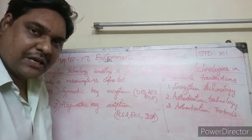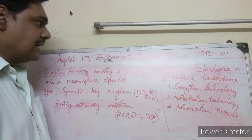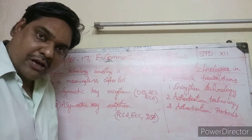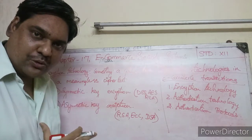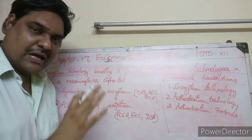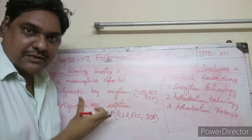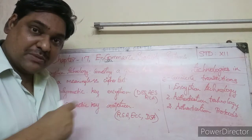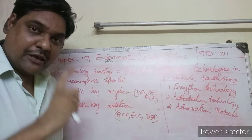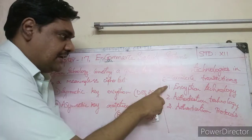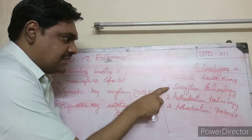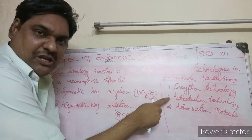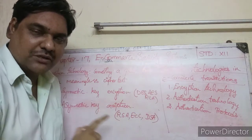Today's session we are going to see about security technologies in e-commerce transactions. How are the security methods ensured in e-commerce? Mainly there are three methods: the first one is encryption technology, the second is authentication technology, and the third is authentication protocols.